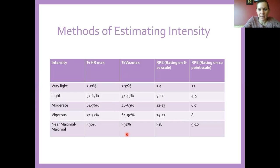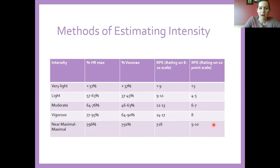I also gave you two different RPE scales. I prefer to use the one-to-ten scale. On a scale of one to ten, ten being the hardest you could go and one being basically nothing — how hard do you feel like you're working? This is a fairly good estimate for us. The more fit your person is, the more accurate RPE is in terms of determining how hard they're actually working.